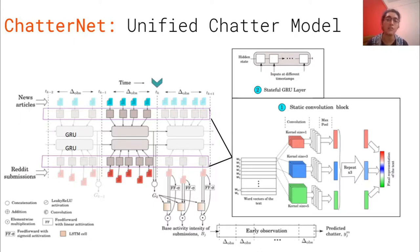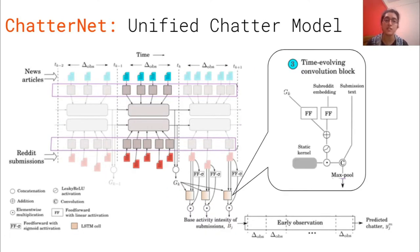Now, at the time of arrival of a post whose chatter we want to predict, the model aggregates the exogenous and endogenous signals up to that point. This unified influence is then passed on to a time-evolving convolution block that estimates the chatter.